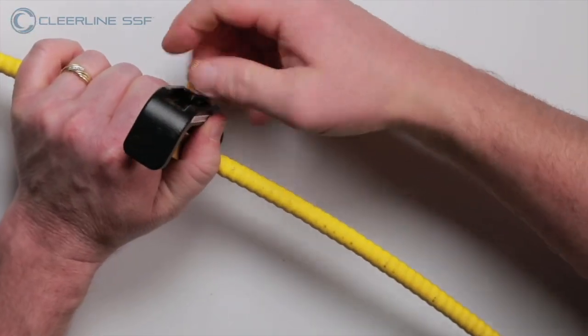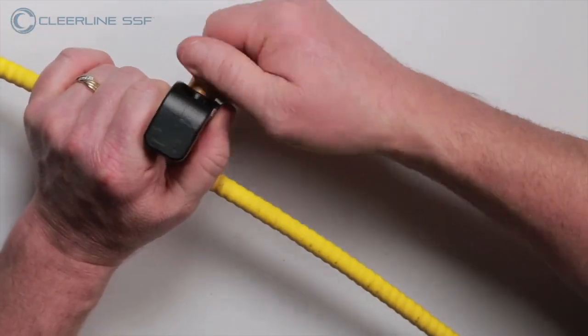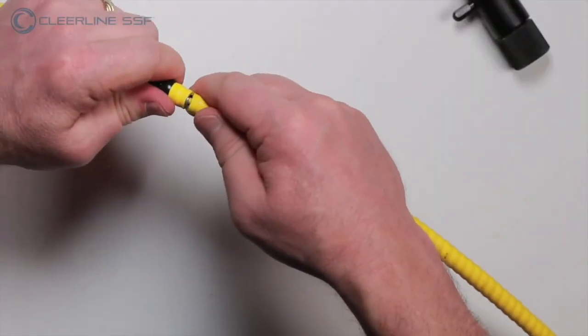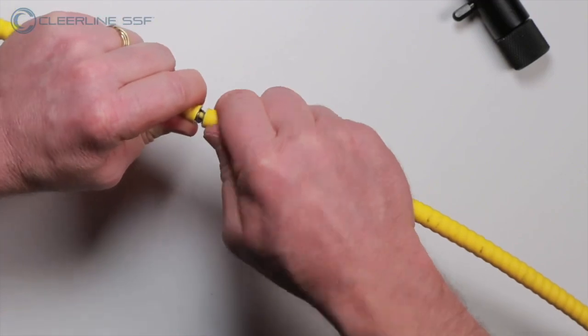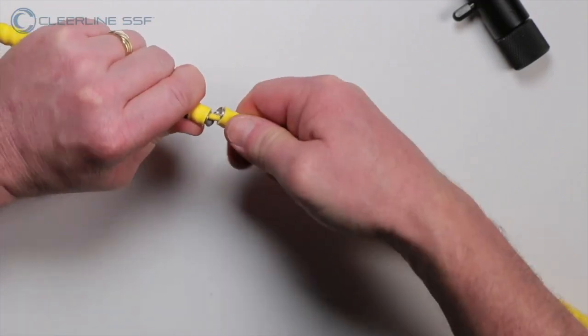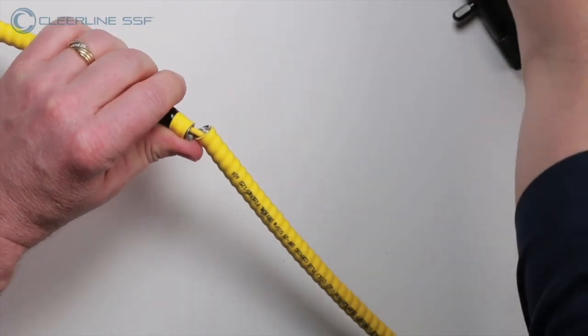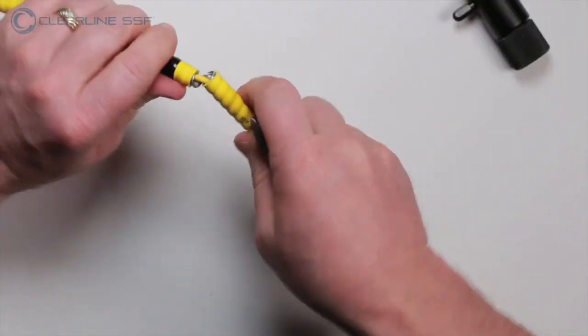Loosen the base thumb screw and side gold screw and remove the slitting tool from the cable. The cable is now ready to be split open. Being careful not to damage the fiber cable located inside, use cutting pliers to trim the armor and remove sharp edges.